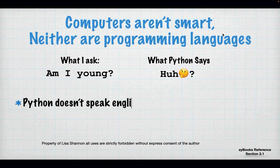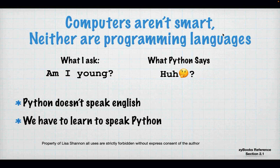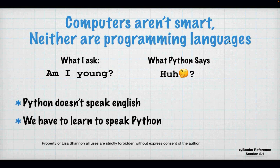Computers aren't smart, and neither are programming languages. All computers are the same when it comes to branching — unless you get into quantum computing, we are stuck with the light switch. So if I ask Python 'am I young?', it will give a whole string of syntax errors because Python doesn't speak English. We have to learn to speak Python.